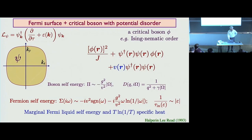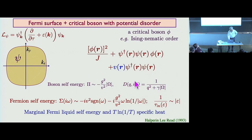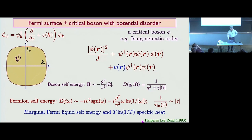...what you find is that the self-energy of the fermions, instead of being omega-to-the-two-thirds, has two contributions: one is the usual Drude lifetime which is independent of frequency, and the other is a marginal Fermi liquid correction. This comes from the fact that the scalar propagator is diffusive at the quantum critical point — you just put that in and you get marginal Fermi liquid behavior in the electron self-energy. This is actually implicit in the famous paper of Halperin, Lee, and Read.